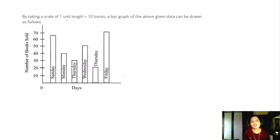Taking scale of unit length equal to 10 books I am taking here, and bar graph of the above given data is shown. The number of books on the vertical line and number of days on the horizontal line. Here it is on Sunday. How much is it on Sunday? This is 65, and on Monday it is 40. Tuesday it is 30, and on Wednesday it is 50. Thursday, how much is it? Thursday it is 20. Friday, Friday it is 70 days, so it's 70. This is how you would draw the bar graph.